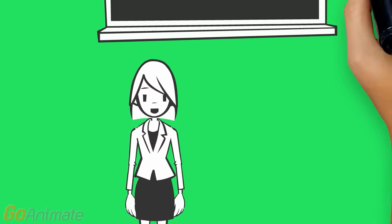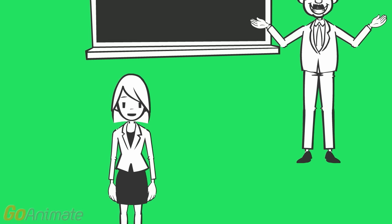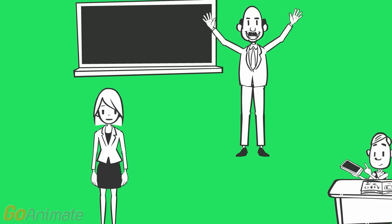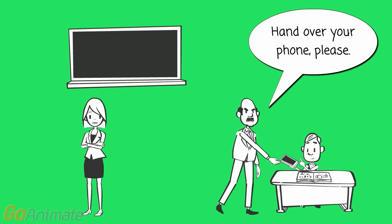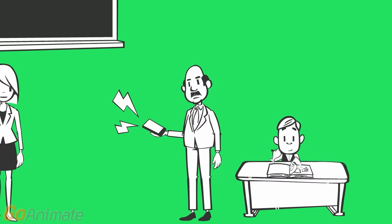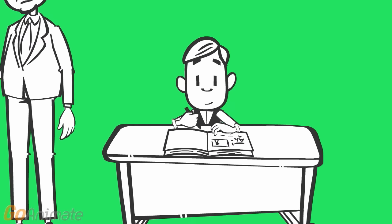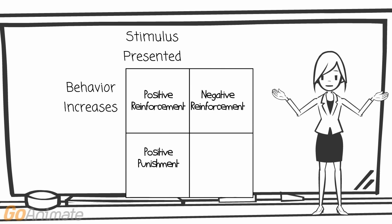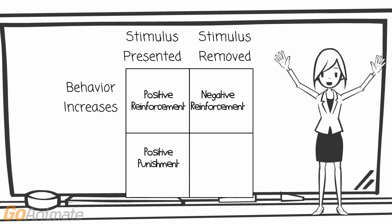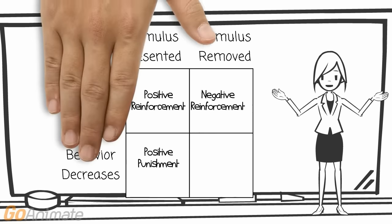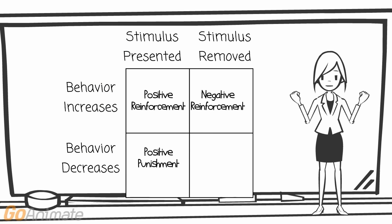In our last example, we have a student who is using their cell phone during class. As a consequence for this misbehavior, the teacher could go over to the student's desk and confiscate the cell phone. The student's misbehavior would decrease, and they could focus on their work again. So, due to a stimulus being removed, the misbehavior decreased, which would be negative punishment.